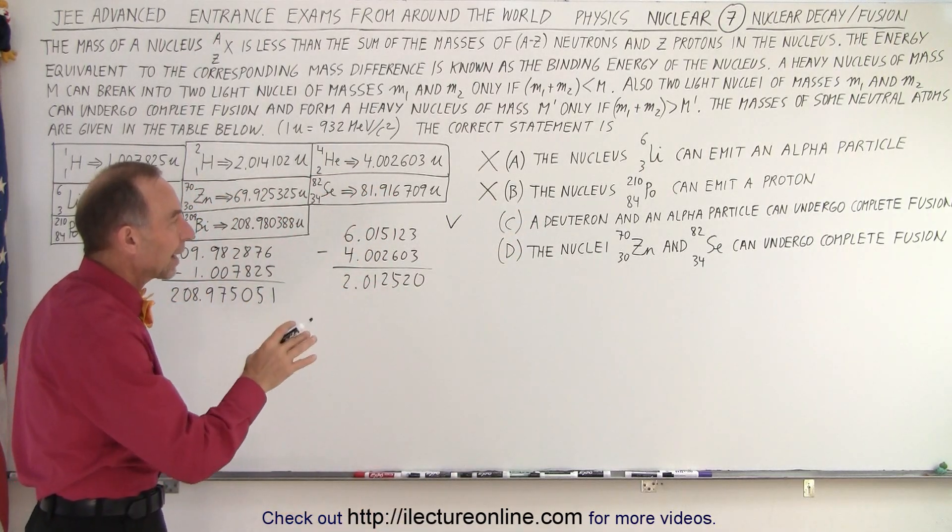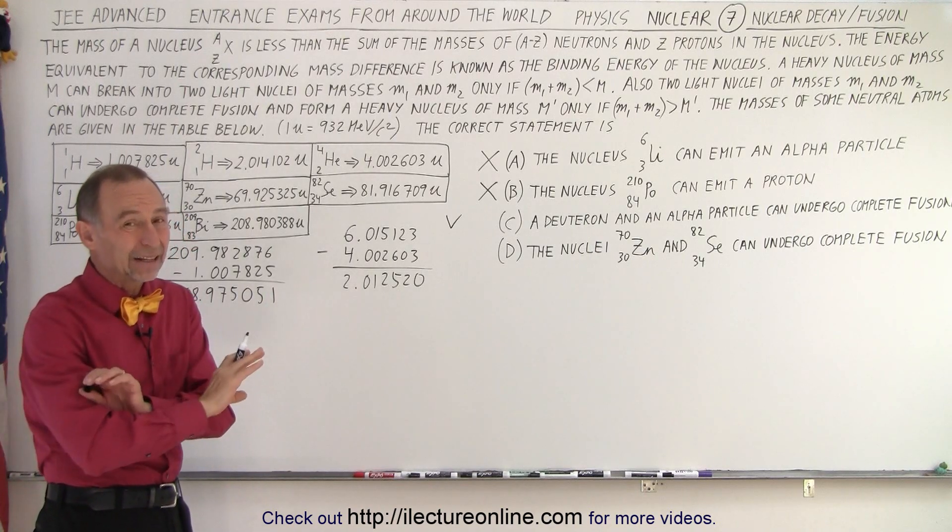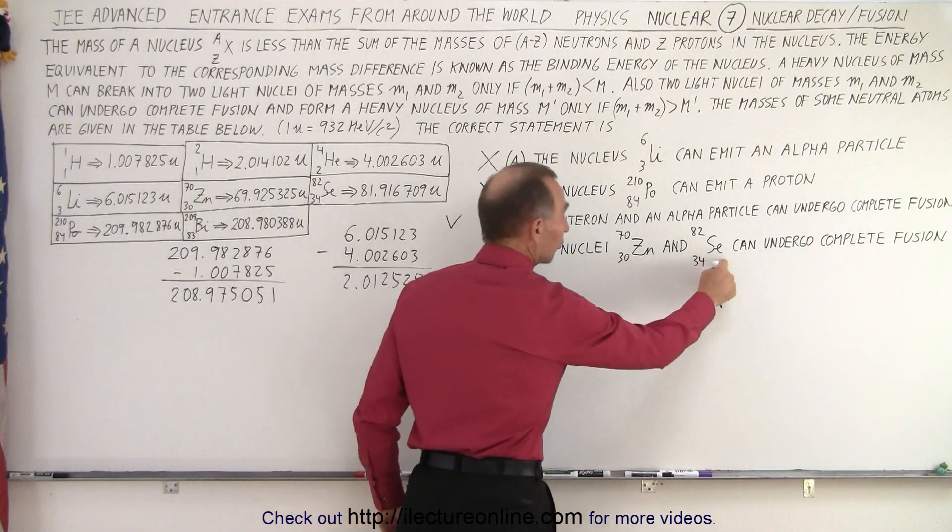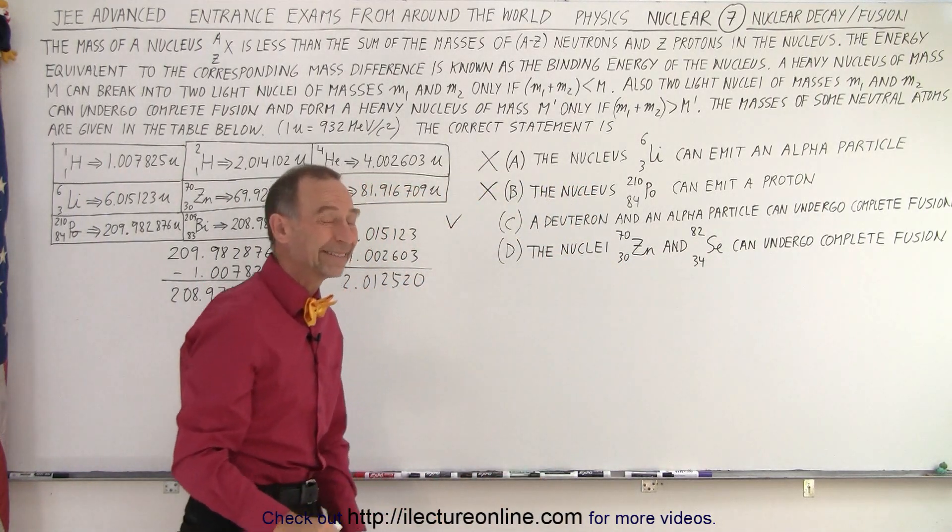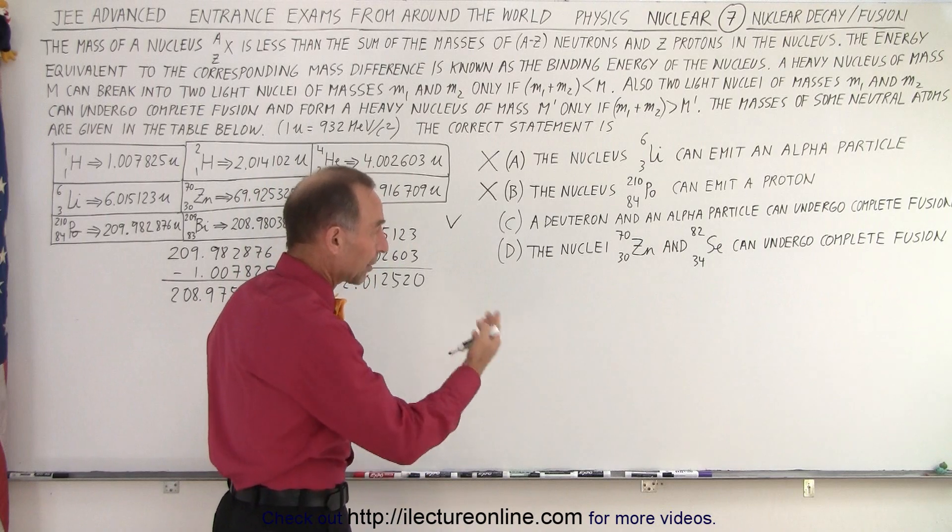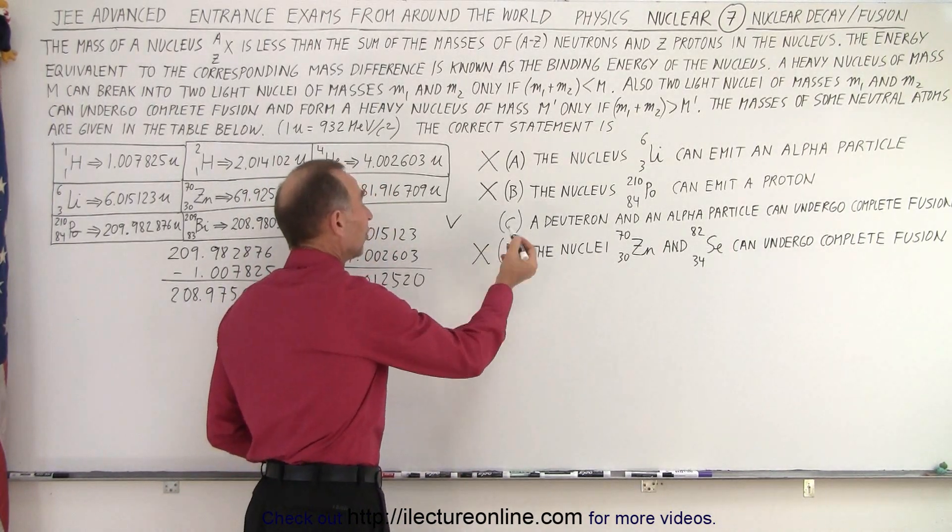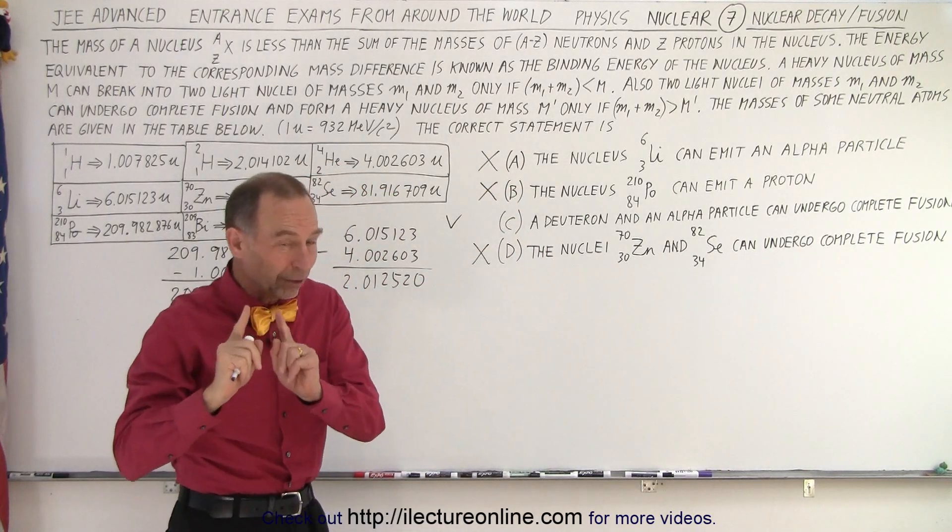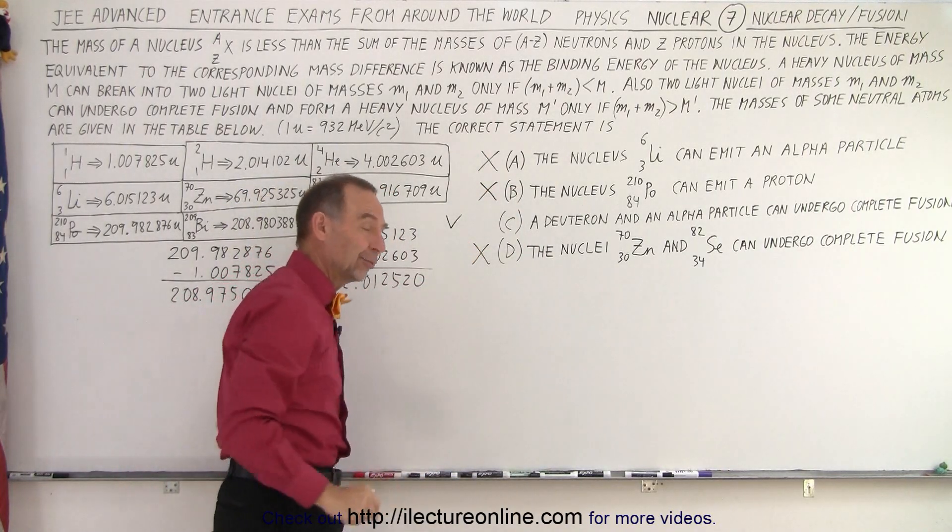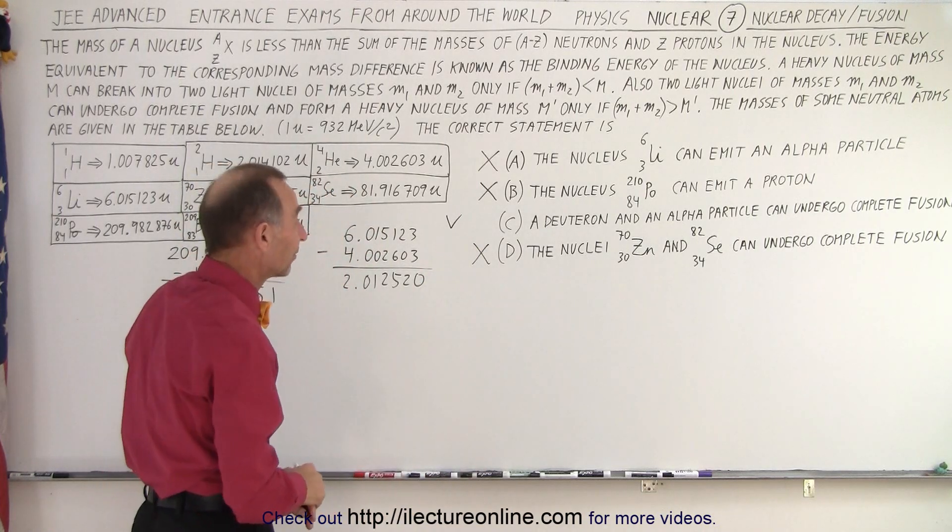And finally, the nuclei zinc and selenium can undergo complete fusion. And again, that is typically not possible because these elements are larger than iron. Both of them. Iron has atomic number 26. So definitely, they cannot fuse. So by default, we've already eliminated A, B, and D. And we know there's at least one correct answer. I would say this one has to be correct. And that's the only correct answer. And that ends up being the case.